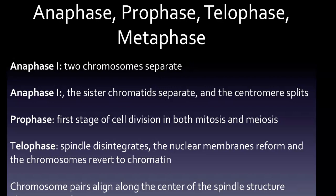During telophase, the spindle disintegrates, the nuclear membranes reform, and the chromosomes revert to chromatin. Finally, chromosome pairs align along the center of the spindle structure during metaphase — that's the part that didn't quite make it on the bottom of the screen.